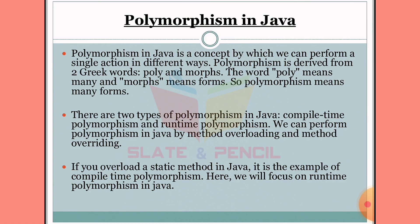If you overload a static method in Java, it is an example of compile-time polymorphism.